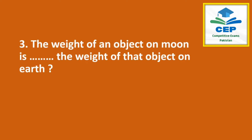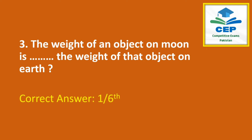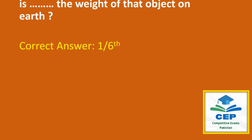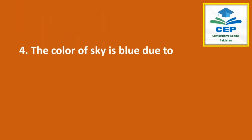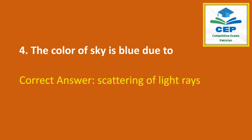The weight of an object on the moon is one-sixth the weight of an object on the earth. The color of sky is blue due to the scattering of light rays.